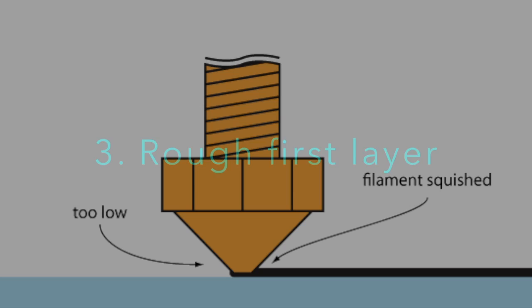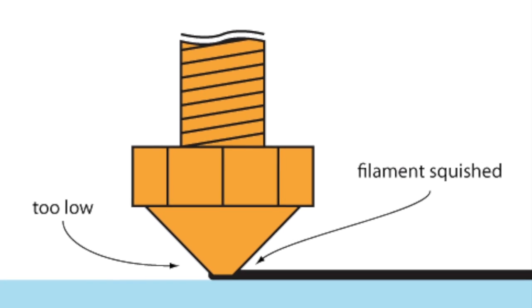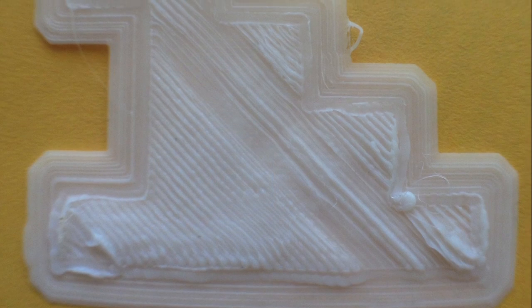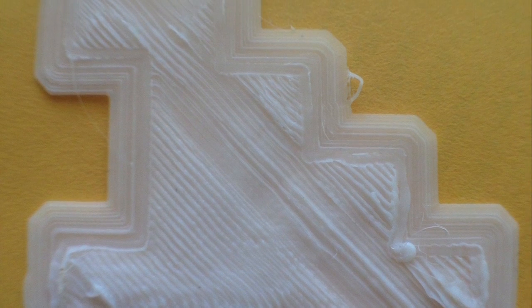A rough first layer is usually one of two issues. Either your nozzle is too close to the bed which is causing the filament to be squished and spread as the first layer goes down, or it's because there's just too much filament being extruded.